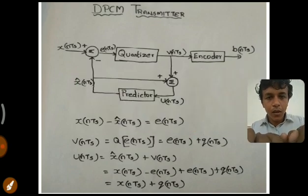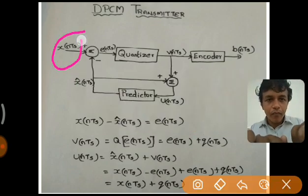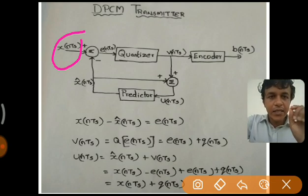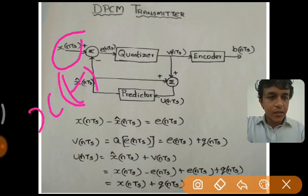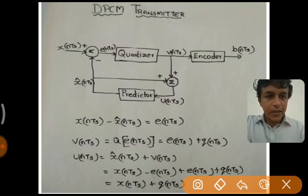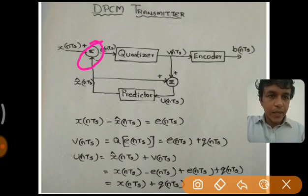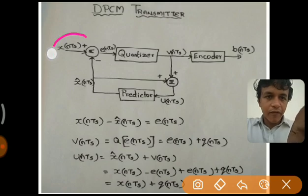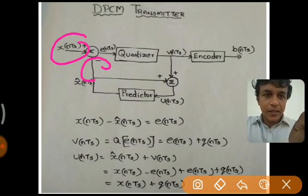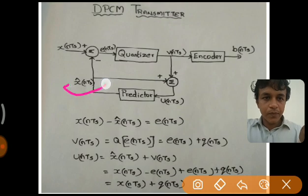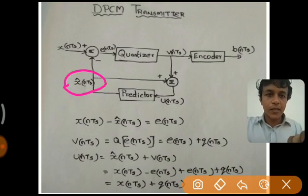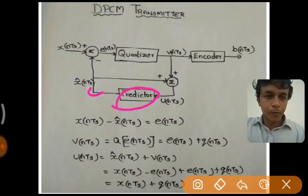Let us see how this is done. x(nTs) is the actual discrete signal — x(t) is the analog signal and when sampled it is represented as x(nTs). This x(nTs) is passed through a summing block, which subtracts the predicted value x̂(nTs) from it. So the summer computes x(nTs) minus x̂(nTs), where x̂(nTs) is the predicted output.